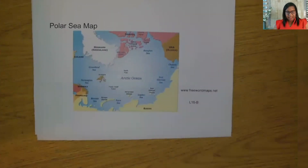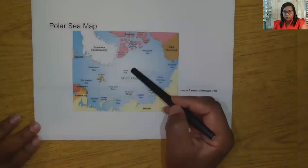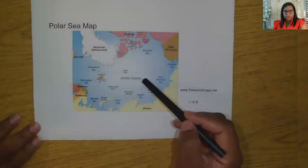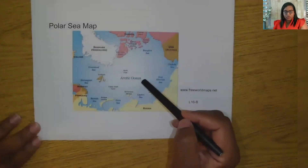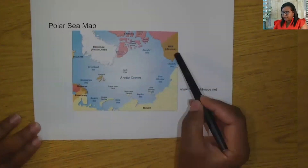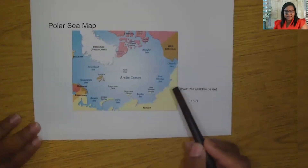And here's our map: North Pole, Arctic Ocean, Alaska, and Russia.